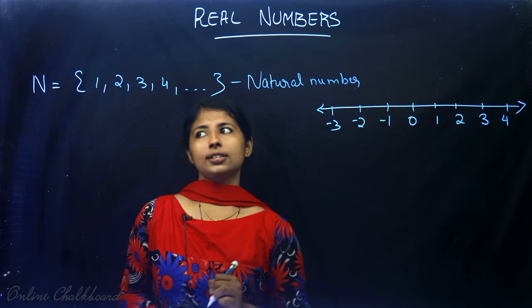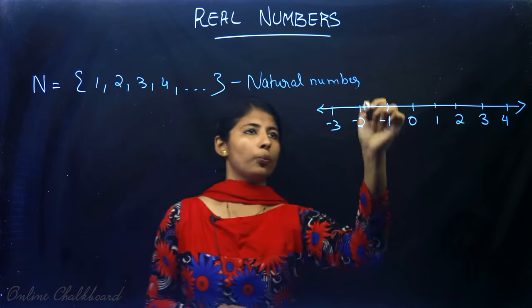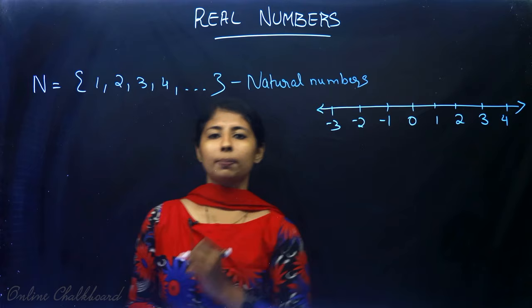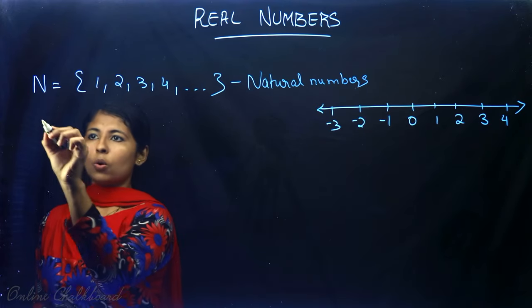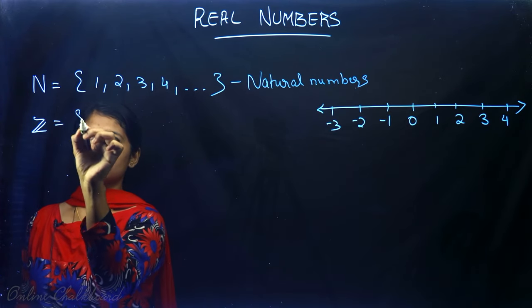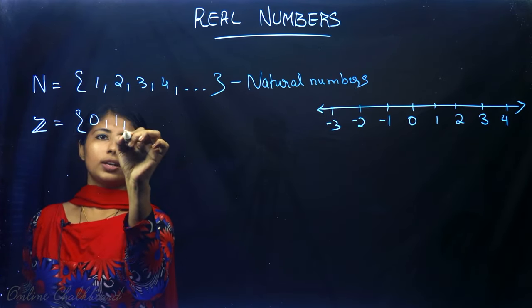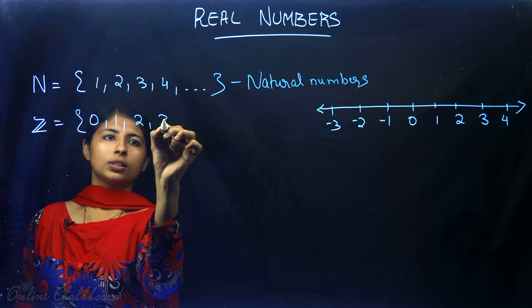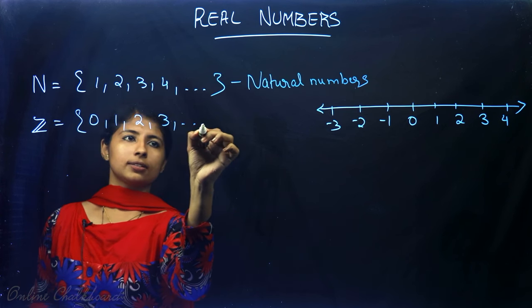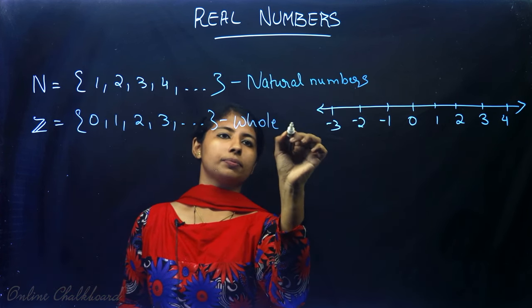Along with this, if I include 0, then it becomes whole numbers: {0, 1, 2, 3, ...}. This set is called whole numbers.